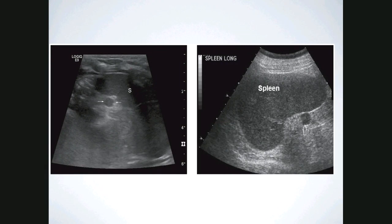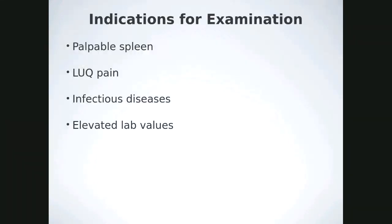Here are a couple of images showing an accessory spleen and what that would look like — all of this should be review. For indications, go to the AIUM guidelines for each organ and look up all the indications and recommendations for scanning. Common indications for a spleen exam include a palpable spleen felt on exam, left upper quadrant pain, infectious disease, and elevated lab values that might indicate a bleed.